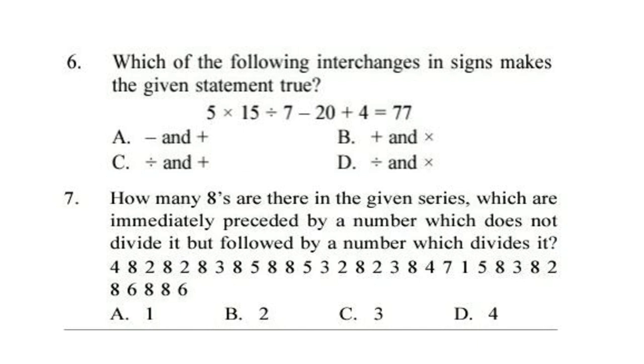Question 7. How many 8's are there in the given series which are immediately preceded by a number which does not divide it but followed by a number which divides it? You can pause the video if required to calculate. Answer is option D. 4.